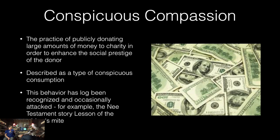Now we move on to conspicuous compassion, which is the practice of publicly donating large amounts of money to charity in order to enhance the social prestige of the donor — that's why there are great big checks. It's a type of conspicuous consumption, and this behavior has long been recognized and occasionally attacked. There's a New Testament story — the gist of it is that it's more impressive if you're poor and giving a little bit to charity than if you're rich and openly giving a lot to charity.